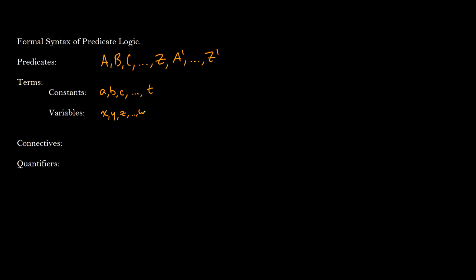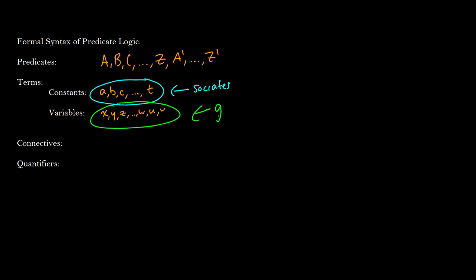When we talk about something specific like Socrates, he would be a term — a constant. He is not going to change. When we talk about variables, we just mean some generic object we don't know which one it is; it hasn't been assigned any specifics. We also have connectives in our logic — negation, or, and, conditional, and biconditional — the same as before.